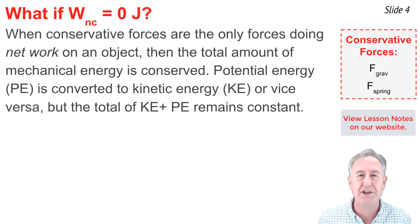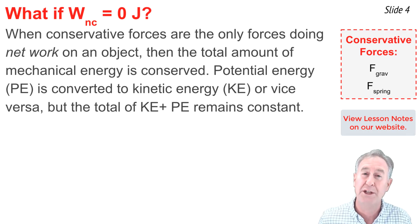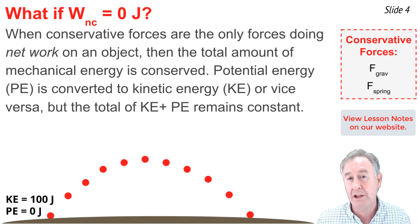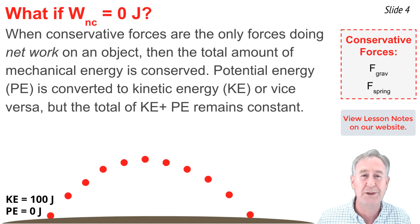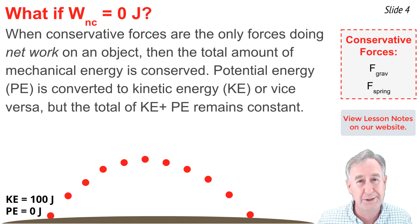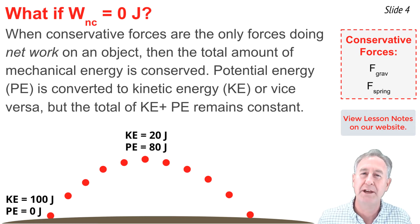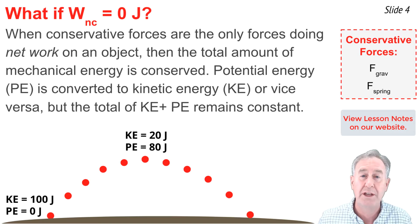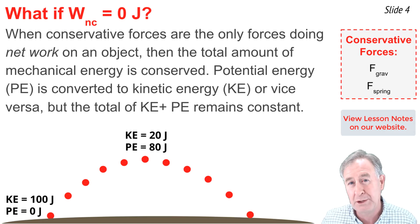As an illustration, let's consider a projectile — an object upon which the only force is gravity. W-nc would be zero for a projectile. Let's assume that at launch it has zero joules of potential energy, being on the ground, and 100 joules of kinetic energy, so the total mechanical energy is 100 joules. When it reaches the peak of its trajectory, it has run out of all of its vertical speed, and its kinetic energy would have decreased to, say, 20 joules. Potential energy would be 80 joules, in order for the total to be 100 joules.